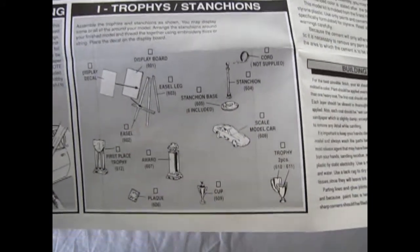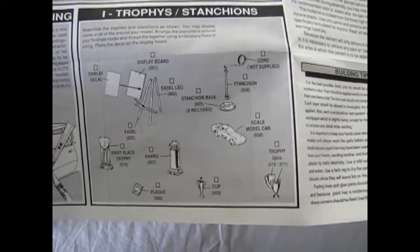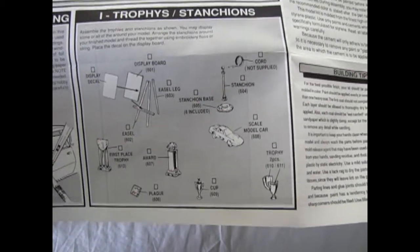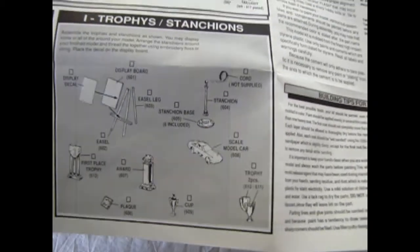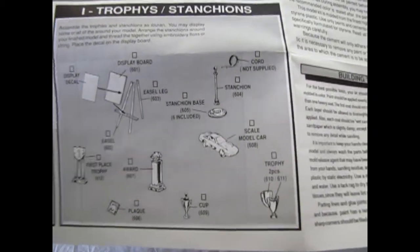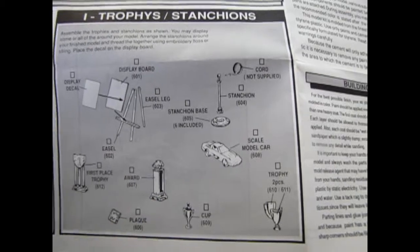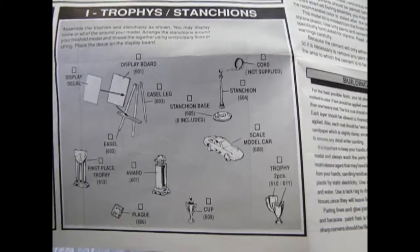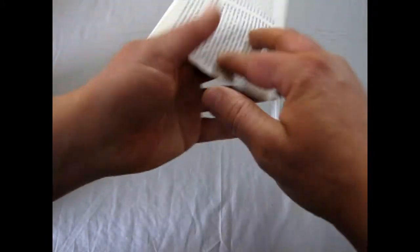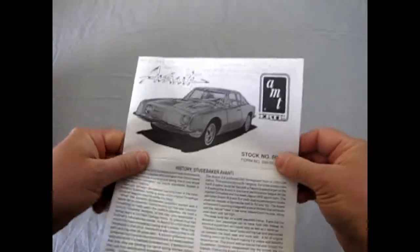And then there's our final little bits. These are all the trophy parts. There's a scale model car of an 84 Corvette, so, or maybe an 89 at this stage - probably make more sense, right. You get an easel with a display board and a display board decal and all the different trophies and stuff. So there's our instructions for our 63 Studebaker.